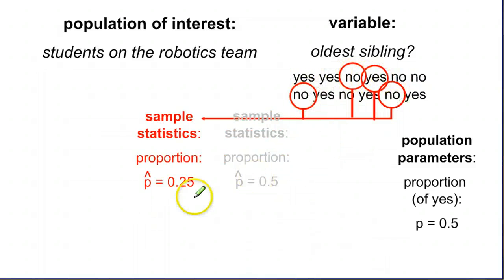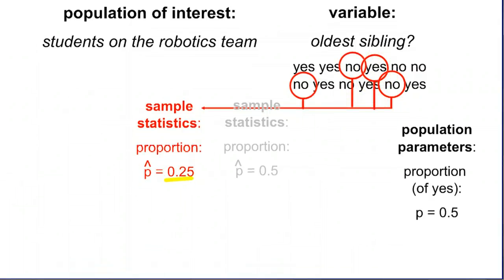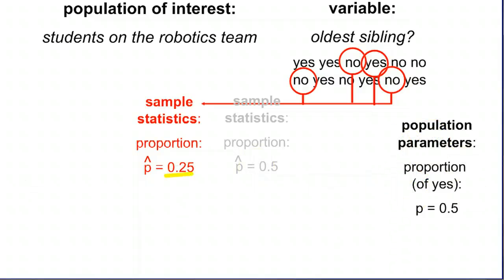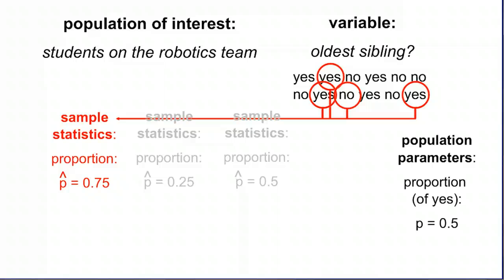Take another sample. No, no, yes, no. Uh oh. Now only 0.25 of our population, a quarter of our population, is answering yes, is the oldest sibling. So that is not the same as our entire population here. And then finally, we take a third sample and we get yes, yes, no, yes. So 0.75. The point is that they could all come out a little bit different. They're not all going to give you the exact same answer and they're not going to all give you the right answer. This right here is if we ask everyone. This is the correct answer. Taking a sample means that sometimes we're going to get it wrong.